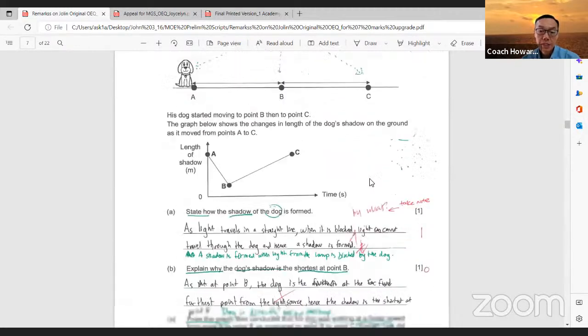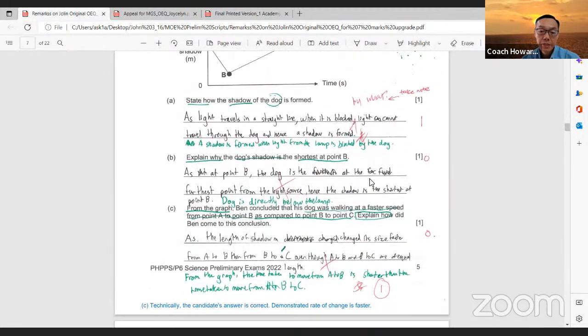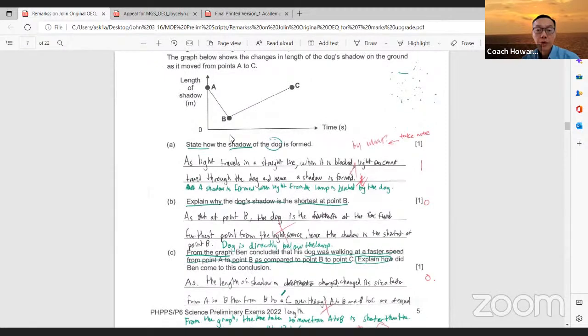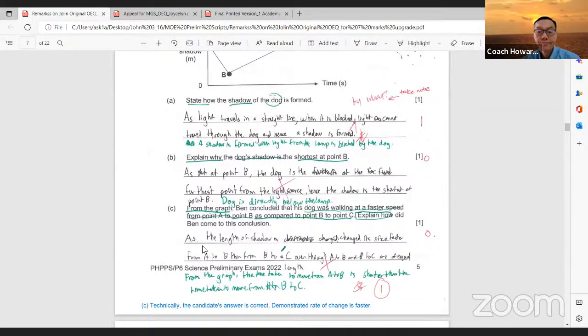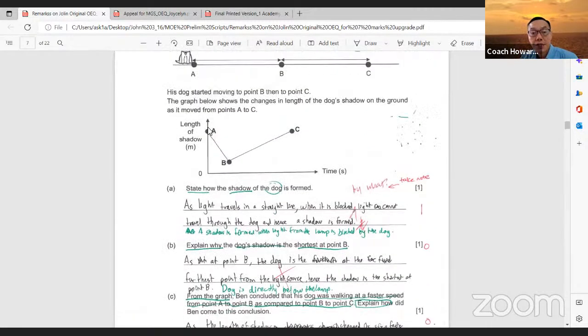I would like to highlight this question in part C. It says that from the graph, Ben concluded that his dog was walking at a faster speed from point A to point B as compared from point B to point C. And the student is required to explain how Ben came to this conclusion. So look at this student's answer. She wrote that as the length of the shadow changes its size faster.